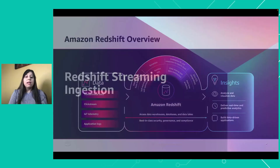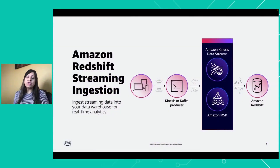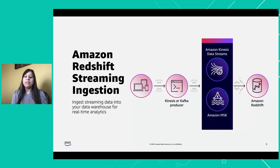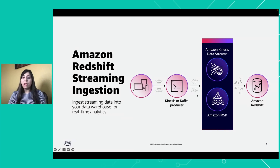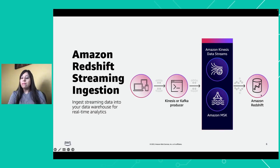Let's go to Redshift streaming ingestion. Earlier, we used to stage the data in S3 — you'd push data through Kinesis Firehose to S3, and then copy the data to Redshift. But now with this new feature, you can directly ingest your data to Kinesis and push updates directly to Amazon Redshift. You can create a materialized view on top of your Kinesis stream, and that view gets updates automatically in real time — close to a few seconds.